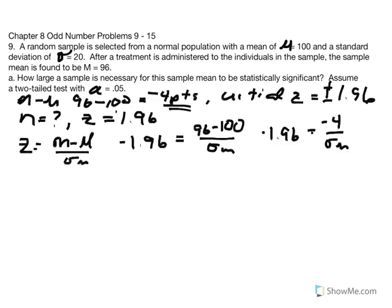This tells us that what we're missing is the standard error. We rewrite and say that the standard error equals negative 4 over negative 1.96 — I just moved the variables around to solve for the missing value. Doing that calculation: negative 4 divided by negative 1.96 gives us 2.04. Rounding to two digits right of the decimal, our answer is 2.04.